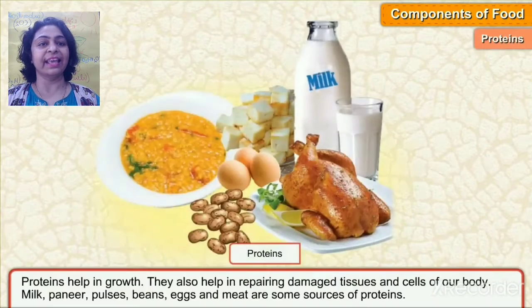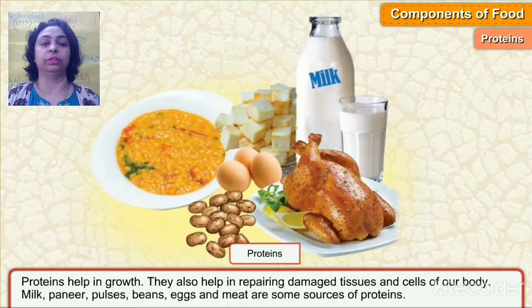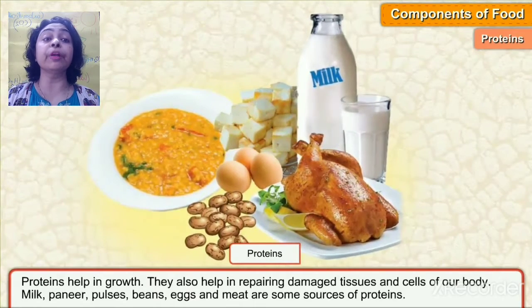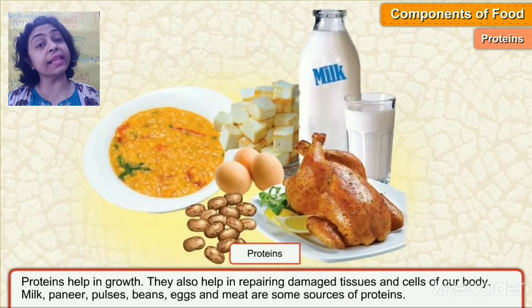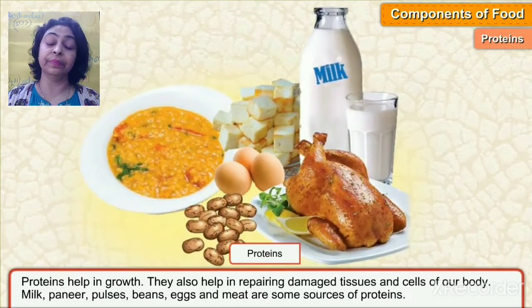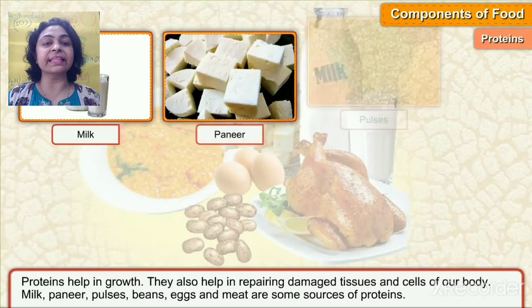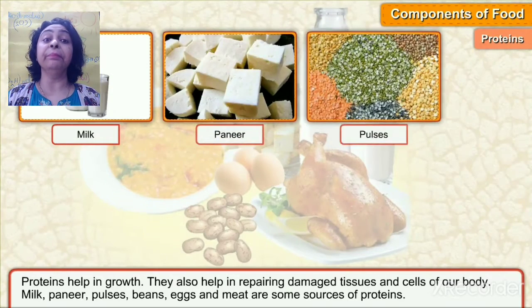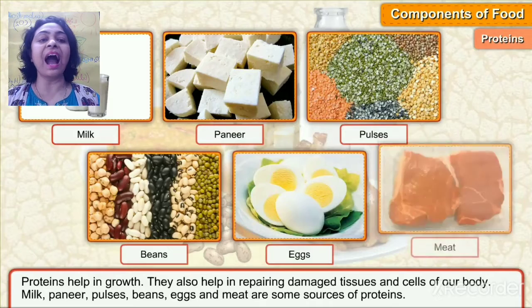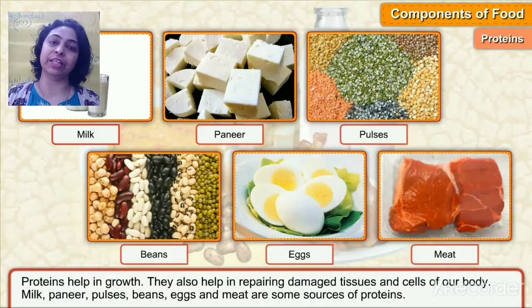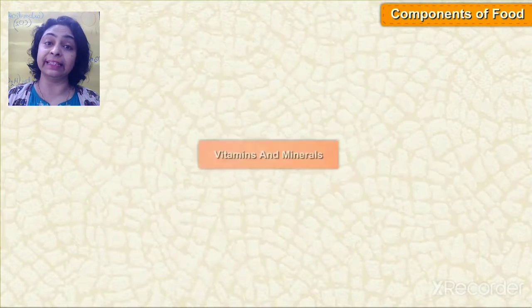Proteins help in growth. They also help in repairing damaged tissues and cells of our body. Milk, paneer, pulses, beans, eggs, and meat are some sources of protein. From these foods we will get protein.